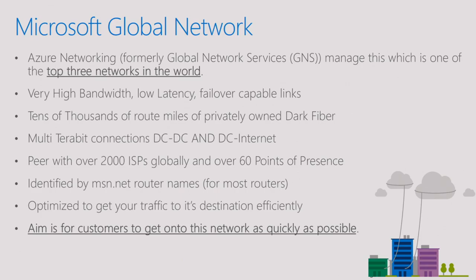That network is managed by a team called Azure Networking, formerly called GNS. It's one of the top three networks in the world — enormous, very high bandwidth, low latency, failover-capable links — privately owned dark fiber to connect both our data centers to the internet and the data centers between themselves. To get your traffic to us, we work very closely with over 2,000 ISPs globally and we have 60 points of presence. Once you know this network is here, you can look at how your ISP is doing with connecting to Microsoft and work out if that's optimal for you.